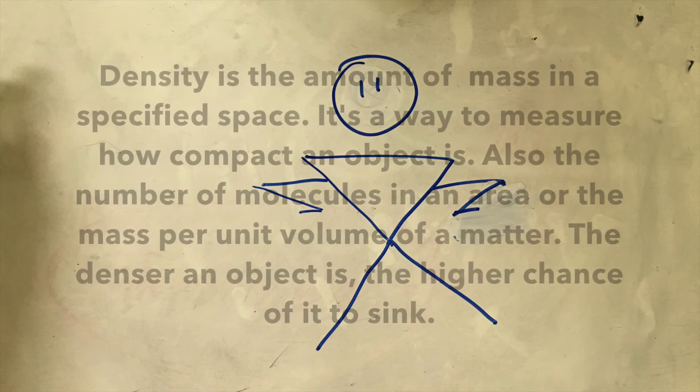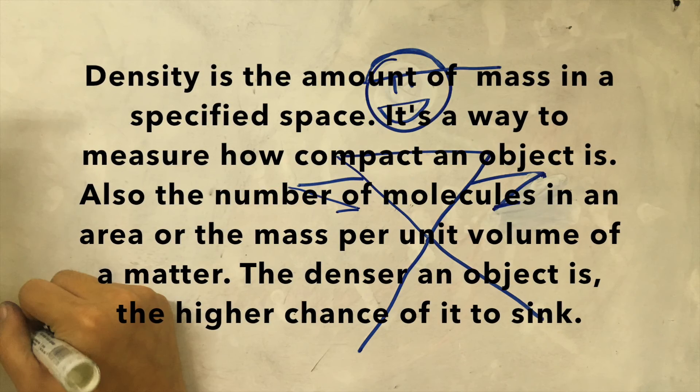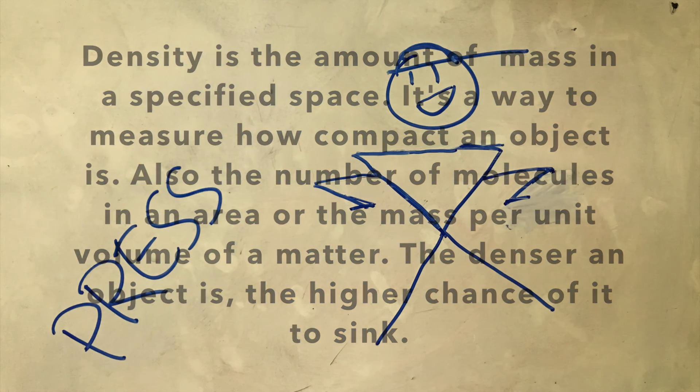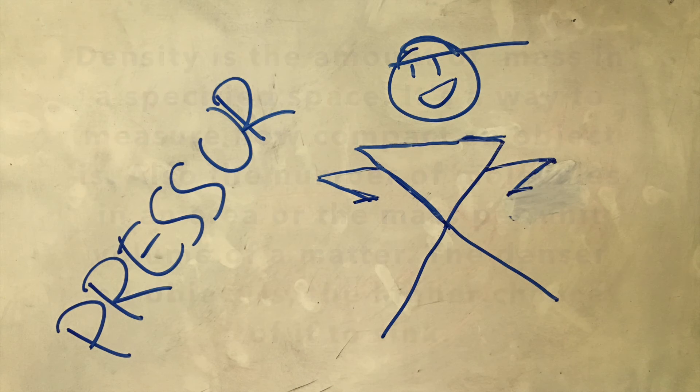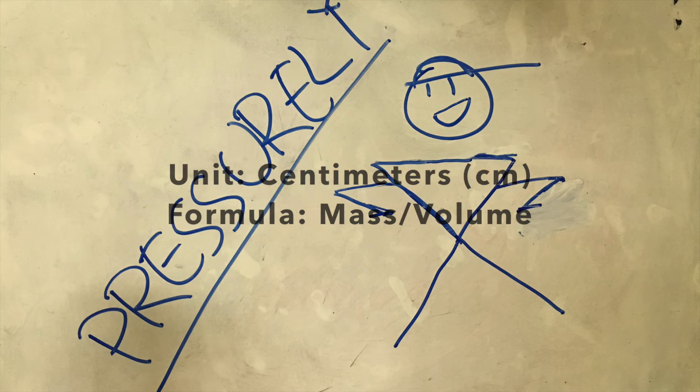Density is the amount of mass in a specified space. It's a way to measure how compact an object is, also the number of molecules in an area or the mass per unit volume of a matter. The denser an object is, the higher chance of it to sink. Density is measured in grams per cubic centimeter, and to find it, you need to divide mass by volume.